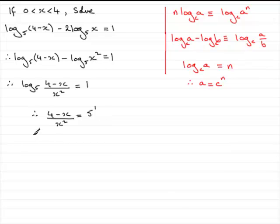And this is 5, obviously. So all I need to do now is just multiply both sides by x squared, and that gives me 4 minus x equals 5x squared.